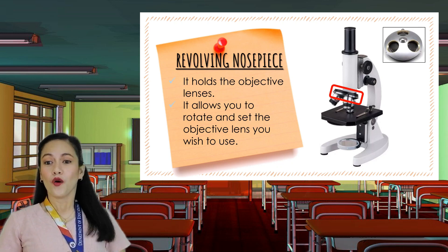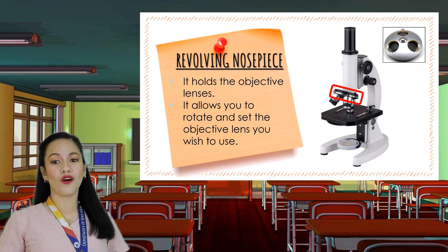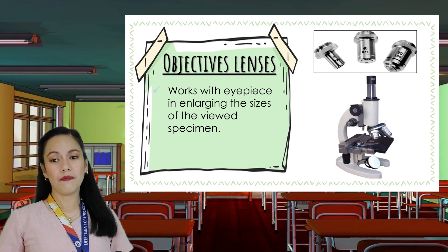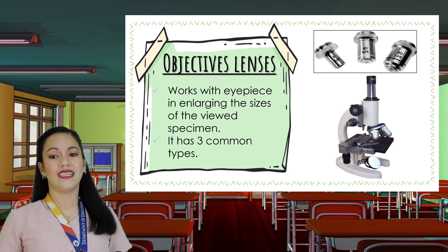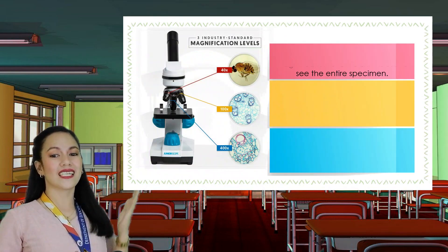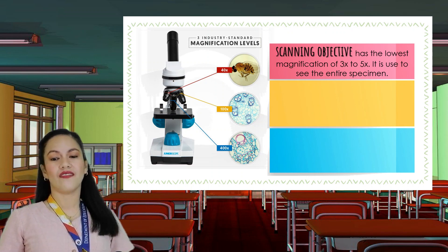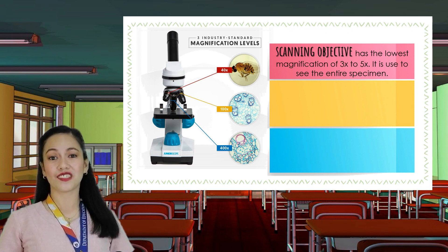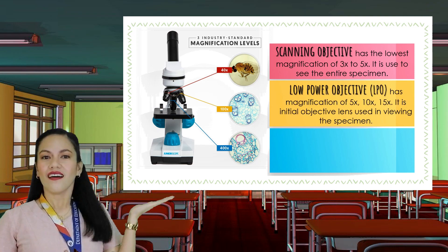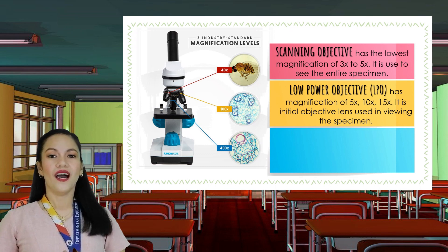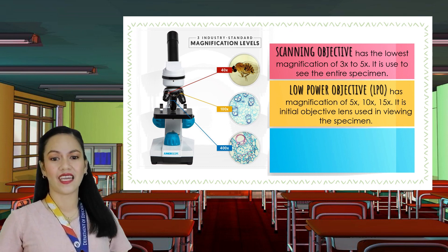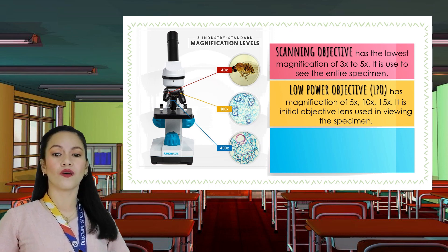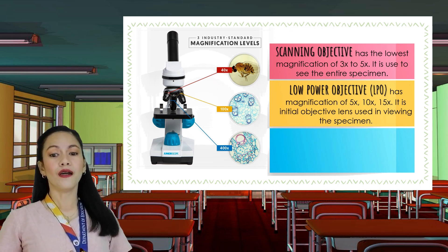Attached to the revolving nosepiece are the three objective lenses. The lenses work with the eyepiece for enlarging the sizes of the viewed specimen, and there are three common types. First is the scanning objective, which has the lowest magnification of 3x to 5x and is used to see the entire specimen. Second is the low-power objective, or LPO, which has a magnification of 5x up to 15x. It is usually the initial objective lens to be used when viewing a specimen and observing its different parts.